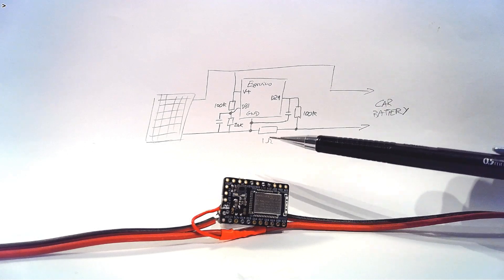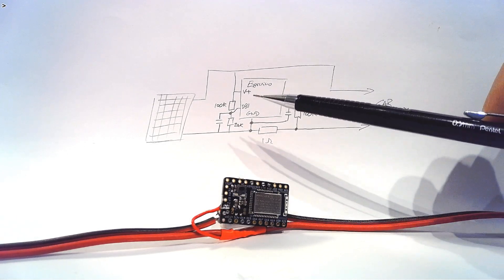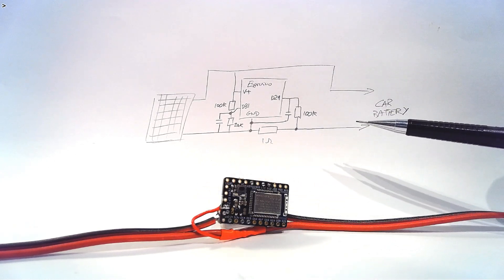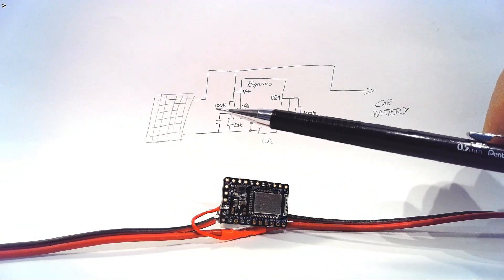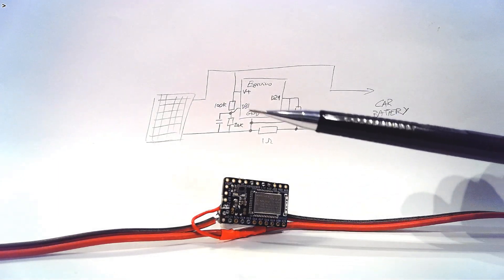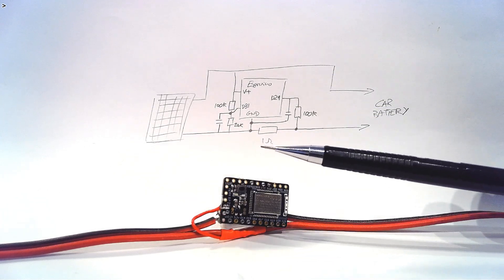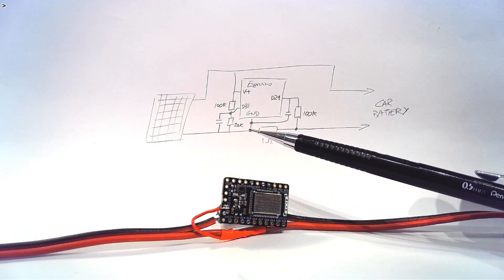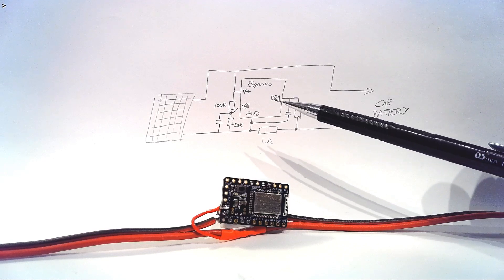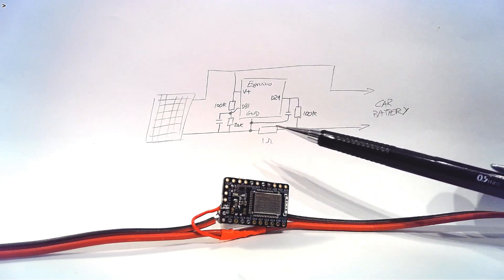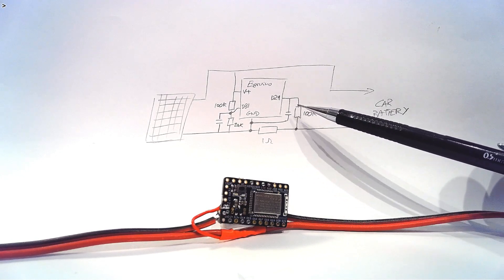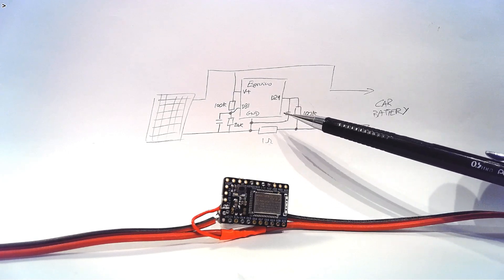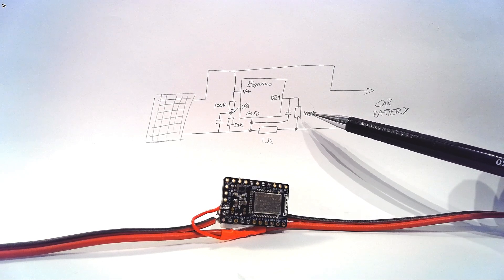A 1 ohm resistor means that 1 amp of current will produce 1 volt. Espruino's inputs will take up to about 3.3 volts, so we could see about 3.3 amps going into the car battery, which is way more than this solar panel will produce, especially in England. First off, we just power the Espruino board from the plus voltage and ground it here, then we connect this input up to the other side of the resistor. We're doing that with a 100k resistor here just to protect it, and the capacitor helps get a much better analogue reading when you're using very high value resistors.